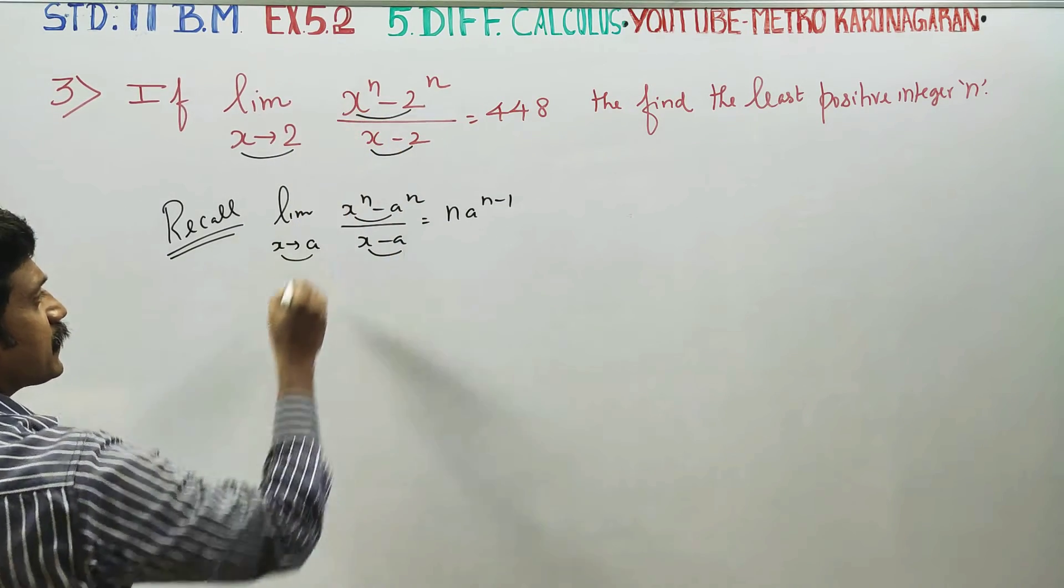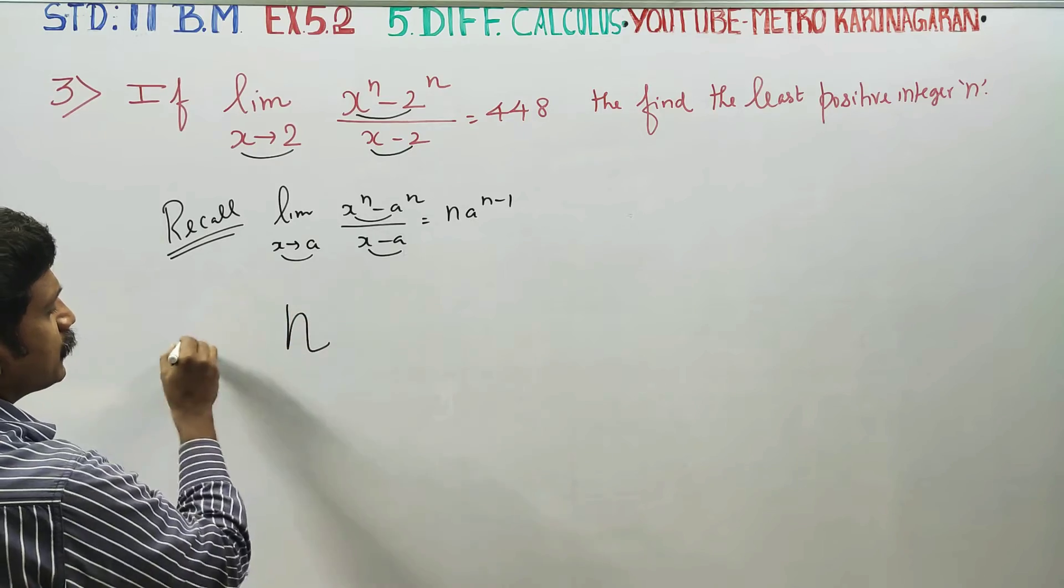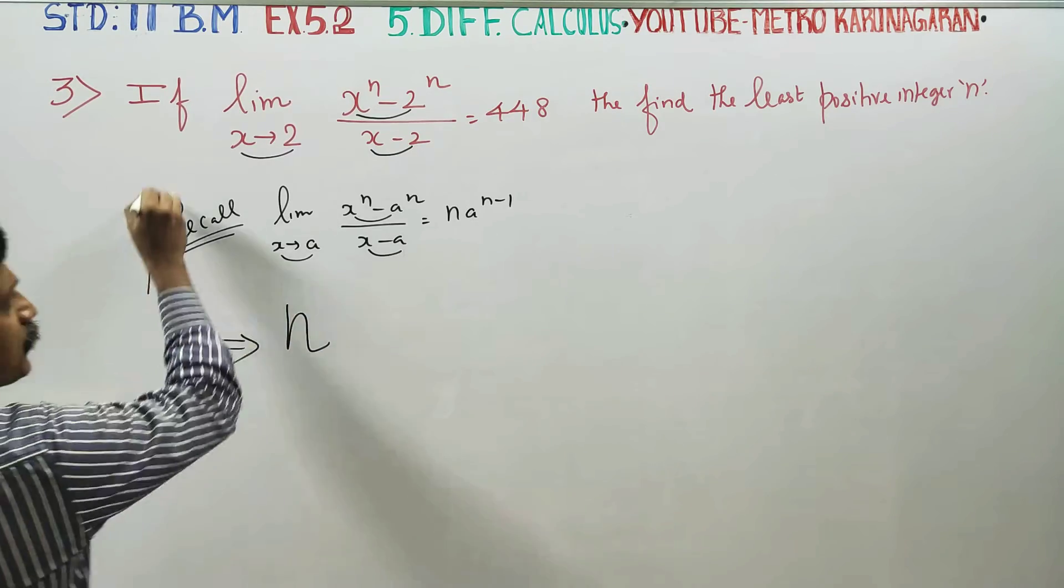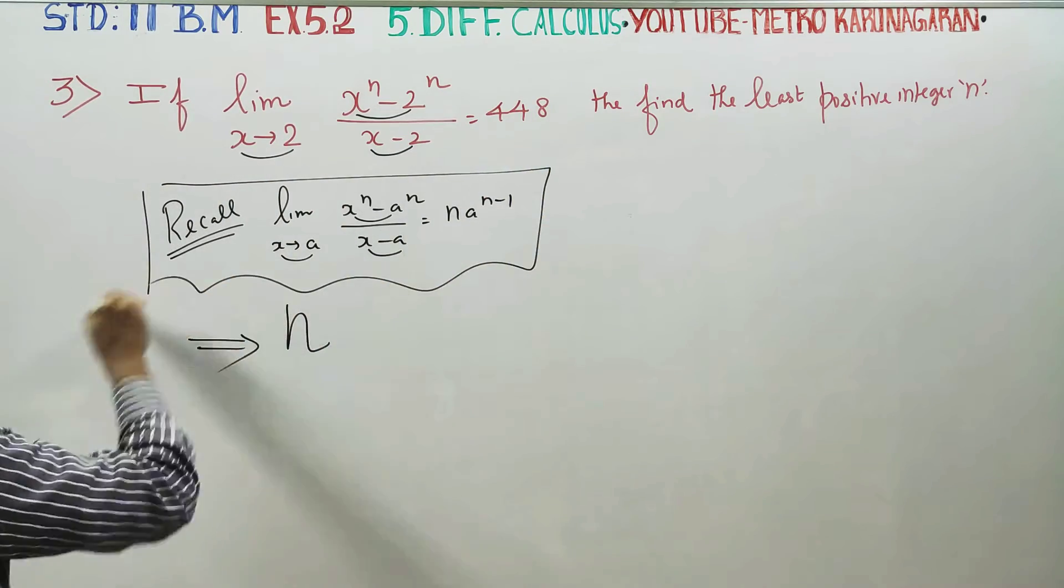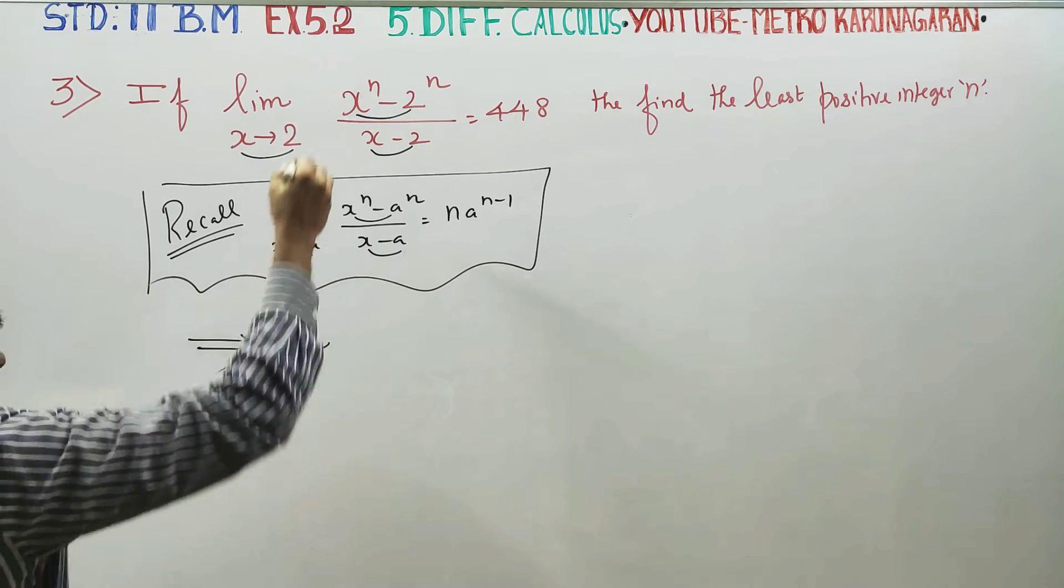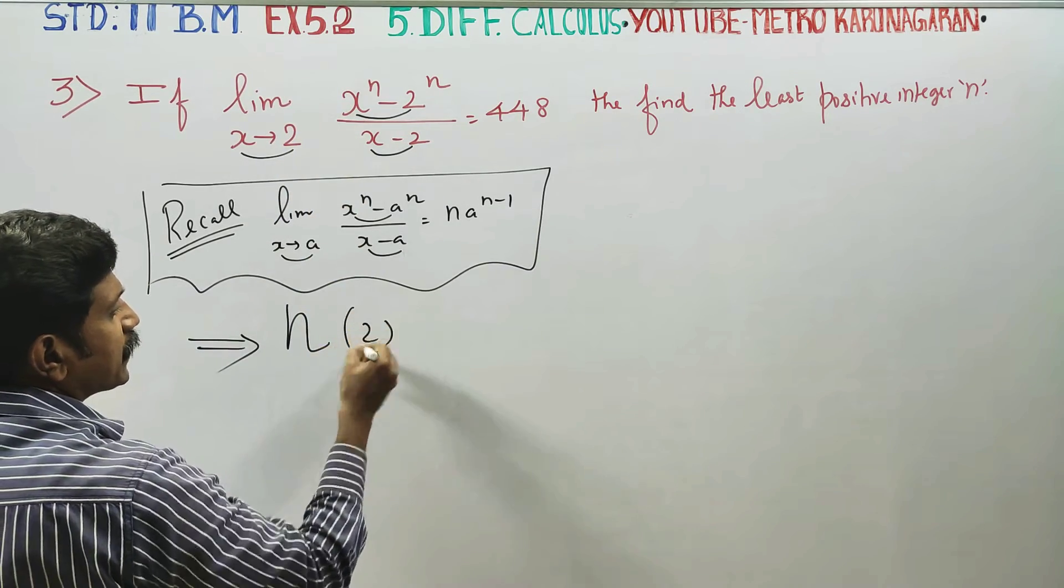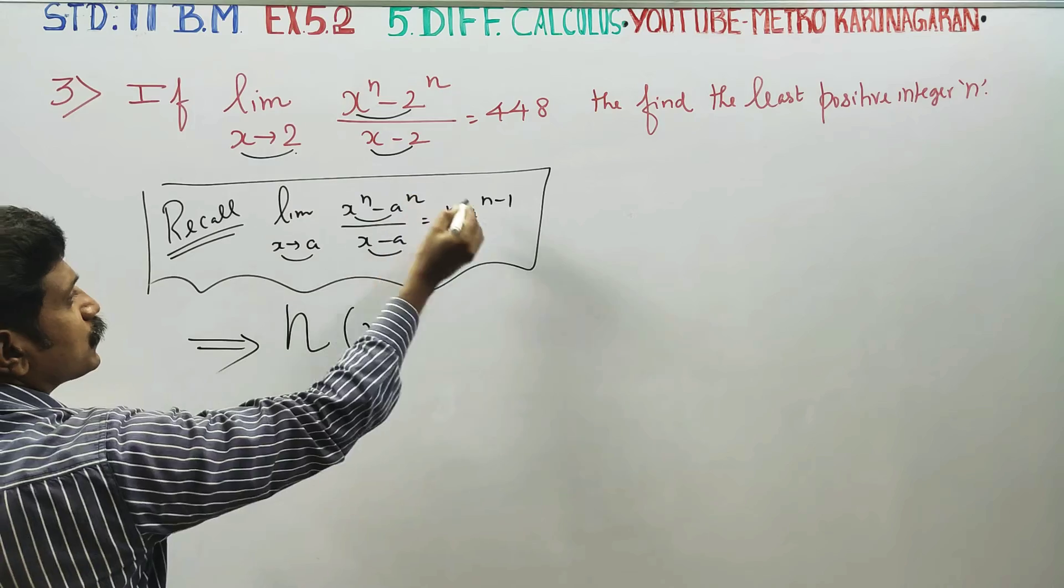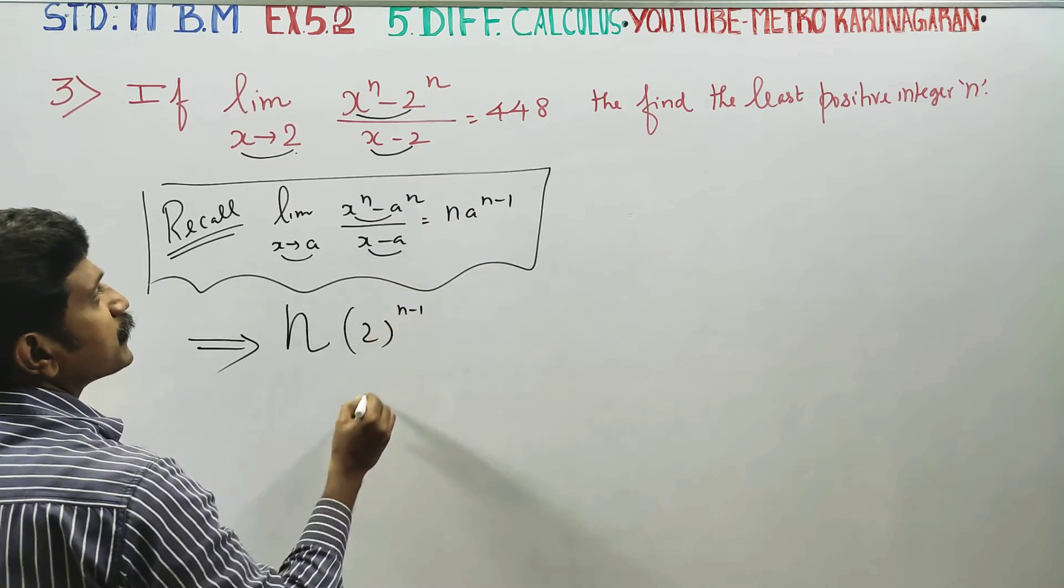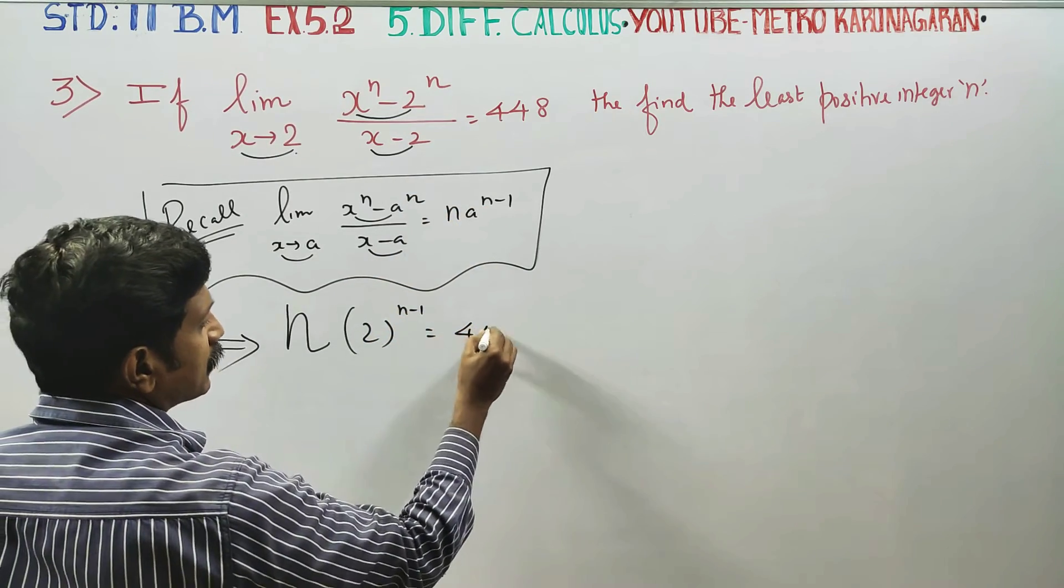When we use the formula, we get n times 2 power n minus 1. So we know that n times 2 power n minus 1 is equal to 448. Now to find n, we need to factorize 448.